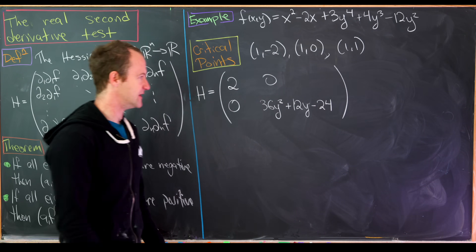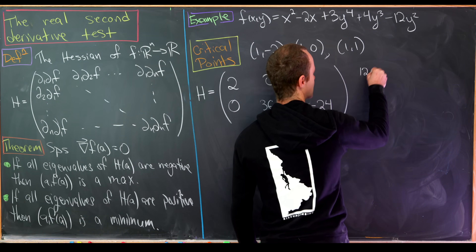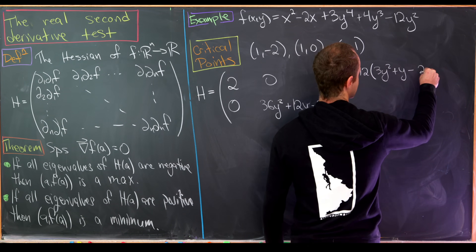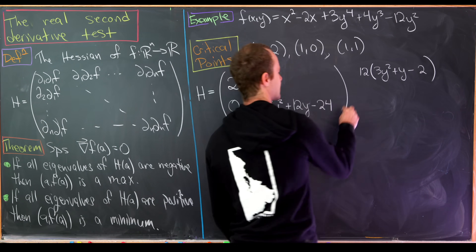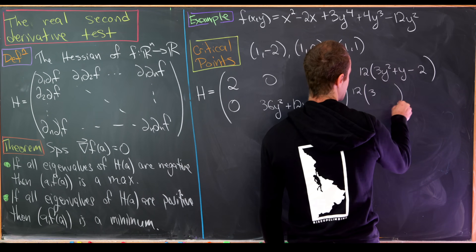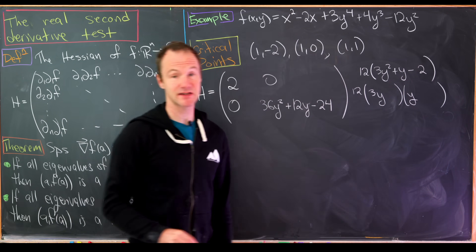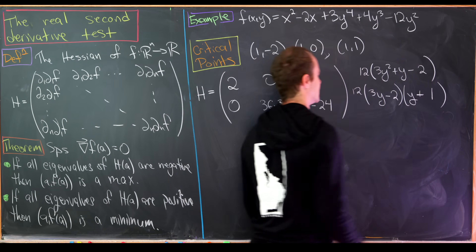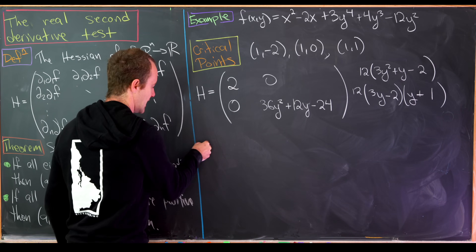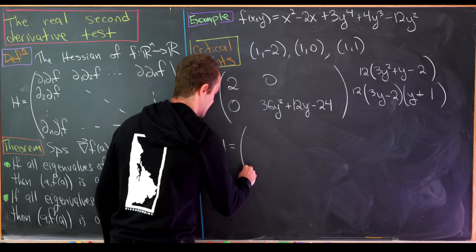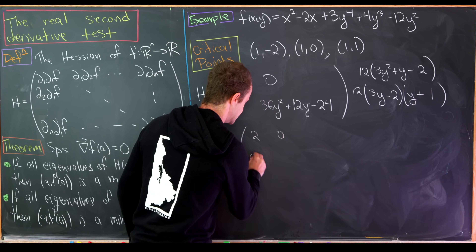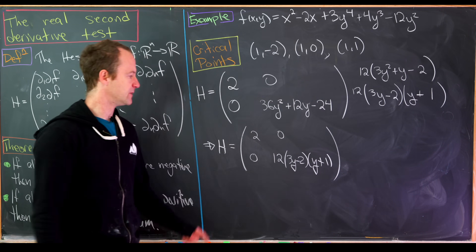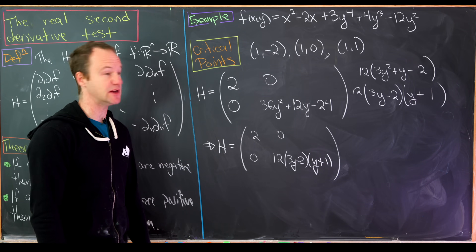Factoring a 12 out of the (2,2) entry gives 12(3y² + y − 2), which factors as 12(3y − 2)(y + 1). So the Hessian is the diagonal matrix with entries 2 and 12(3y − 2)(y + 1). Since it's diagonal, the eigenvalues are simply the diagonal entries, so we just evaluate those at each critical point.